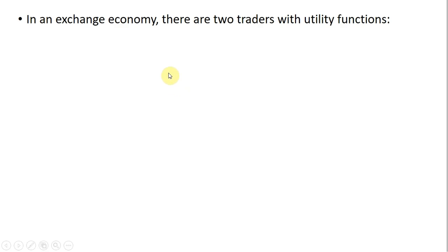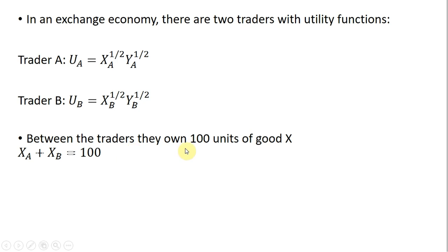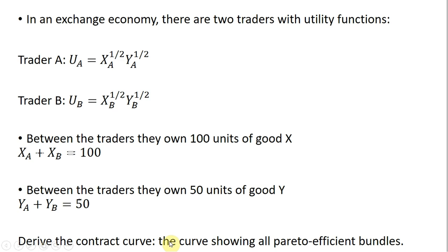We have an exchange economy with two consumers or two traders with utility functions given by the following. Notice both traders have the same exact utility function. Between the traders, they own 100 units of good X, so units of good X that trader A has plus units of good X that trader B has must sum to 100. Also between the traders, they own 50 units of good Y, so units of good Y from trader A plus units of good Y from trader B sums to 50. Our goal is to derive the contract curve.